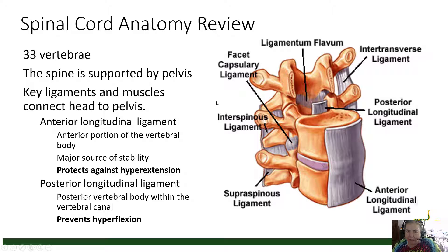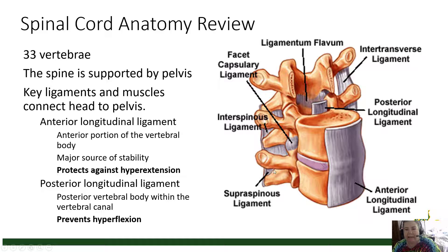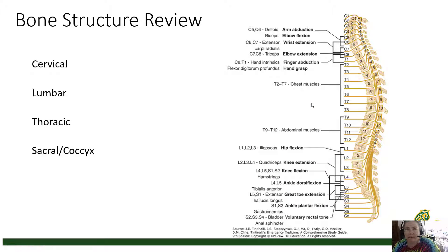Bending backwards in an extreme way — this ligament stabilizes the spine and prevents that. There is also the posterior longitudinal ligament that runs down the posterior surface of the vertebral bodies within the spinal canal, stabilizing that spinal column to prevent injuries due to hyperflexion. There are also interspinous ligaments, supraspinous ligaments, facet capsule ligaments, intertransverse ligaments, and the ligamentum flavum on the posterior surface of the spinal canal, all of which help to stabilize the structure.